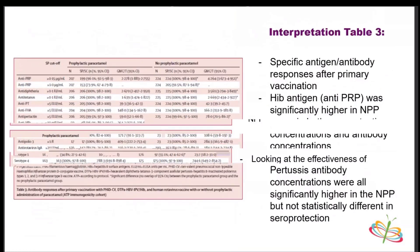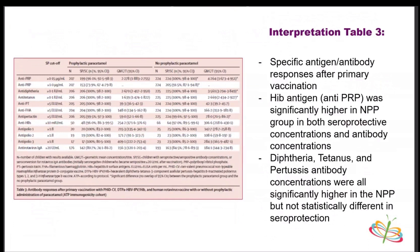Table three looks more at the specific antigen antibody responses. The serotype protective cutoffs for each group are listed here. The Hib antigen was significantly higher in the non-paracetamol group in both seroprotection concentrations and antibody concentrations, whereas with diphtheria, tetanus, and pertussis, the antibody concentrations were all significantly higher in the non-paracetamol group but not statistically different in the seroprotection.